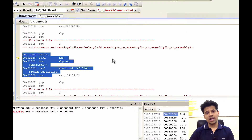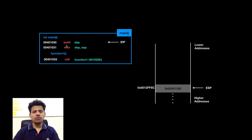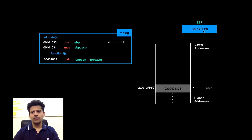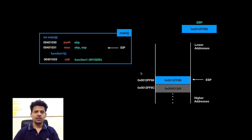Let's see the same thing in animation format. We are executing from main and eip is pointing to push ebp. ebp is 0012ffb8, which will get pushed onto the stack. After that, the next instruction is move esp into the ebp, because from this point it will be main's stack frame. esp has now been moved into the ebp.